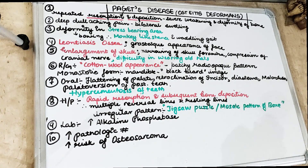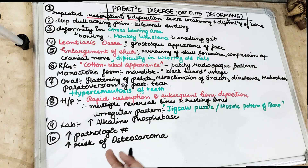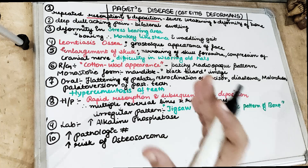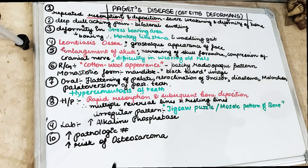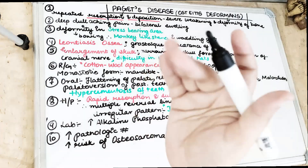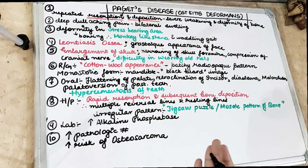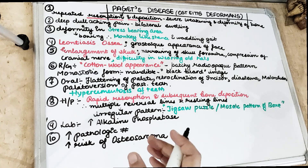In Paget's disease, the size of the skull increases. Most patients complain that their hat size increases — whenever they wear their old hat, it no longer fits. That is the most common characteristic feature patients complain of. The second most common feature is deep and aching bone pain, along with swelling of the bone and deformity in stress-bearing areas. Paget's disease most commonly involves men compared to the female population.